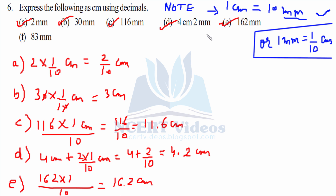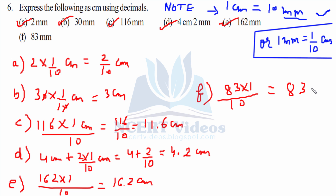Part F: 83 mm divided by 10 centimeters equals 8.3 centimeters. You find the decimal point by counting the number of zeros in the denominator. That completes question 6.